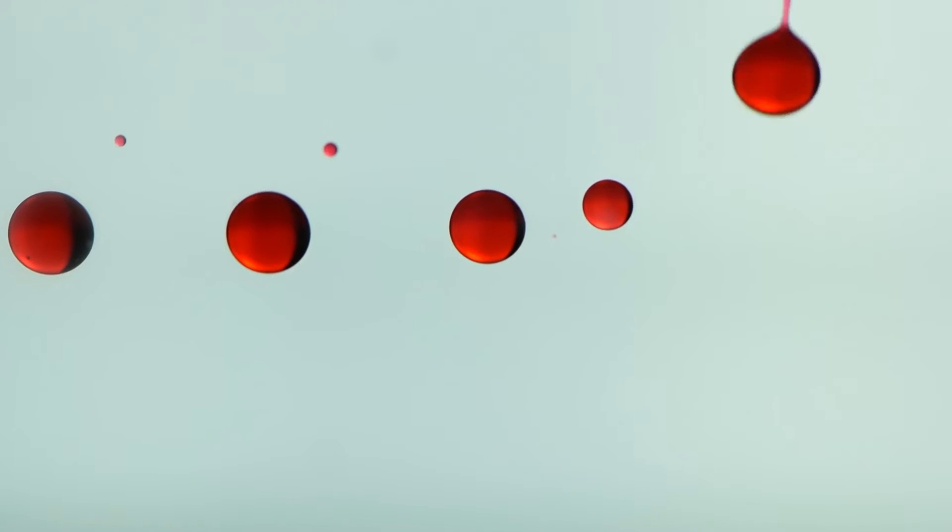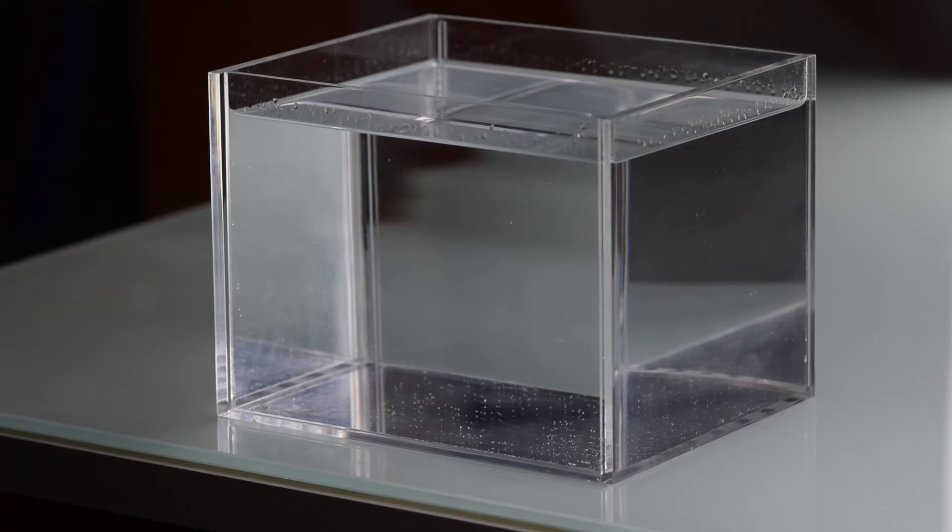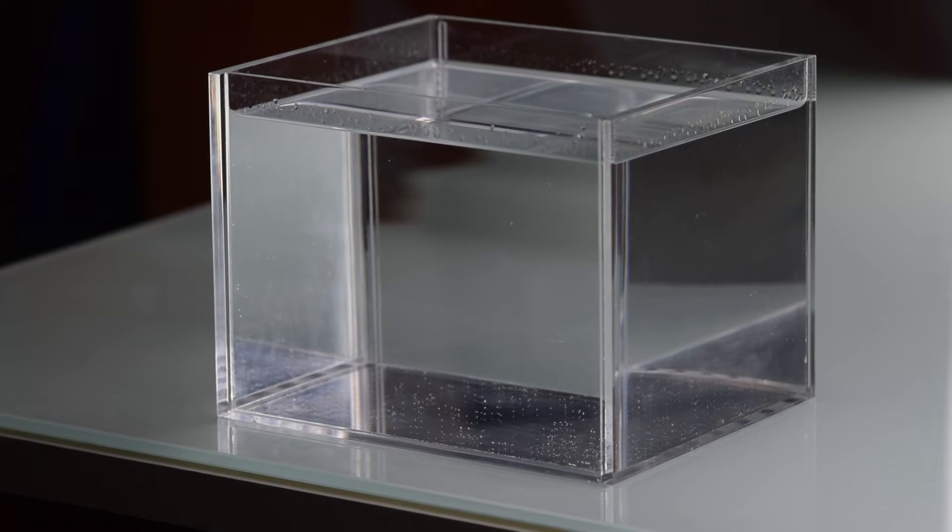The first observable consequence of the existence of surface tension is the ability of drops to select particular shapes. We demonstrate this by showing a clever experiment, initially done by the Belgian physicist Joseph Plateau in the 1850s. We have filled a transparent tank with pure water at the bottom and more and more alcoholic water as we rise in the tank. Since alcohol is lighter than water, the stratification in density is stable over at least several hours, if we make sure that the tank is not shaken.